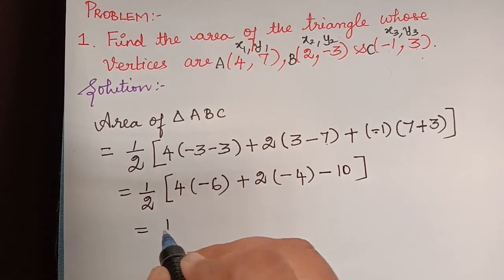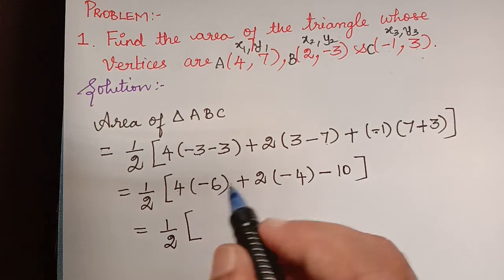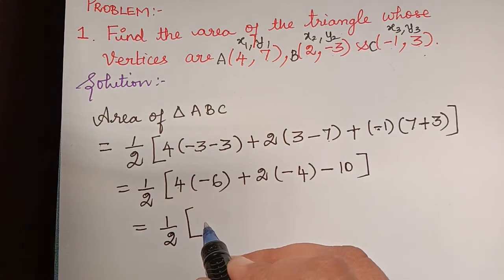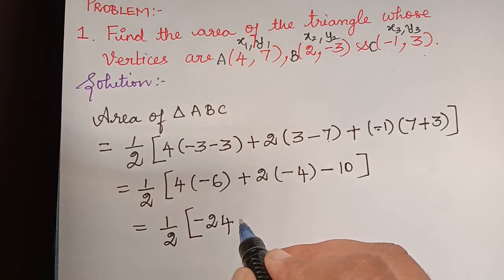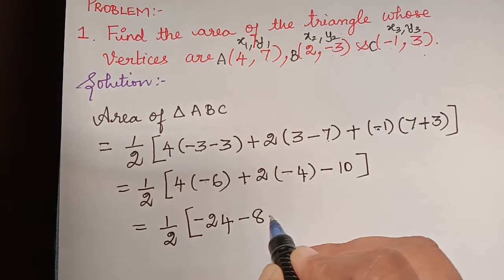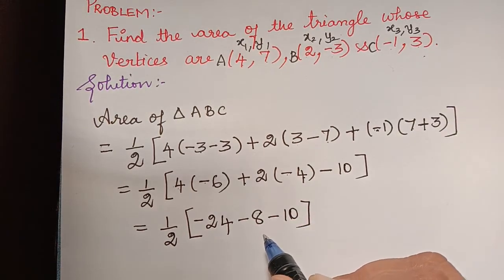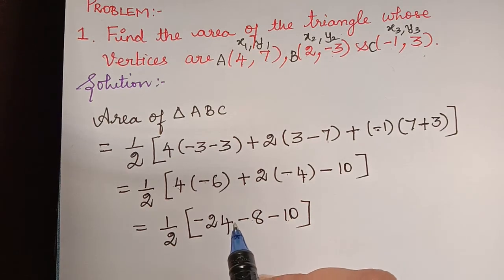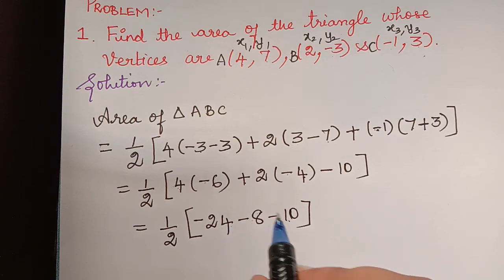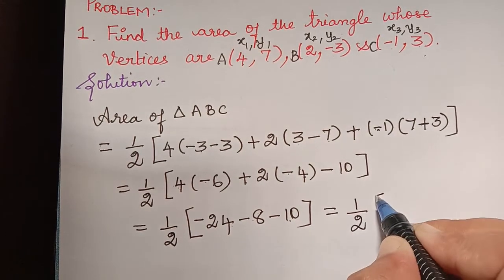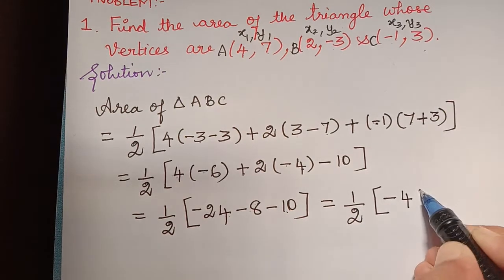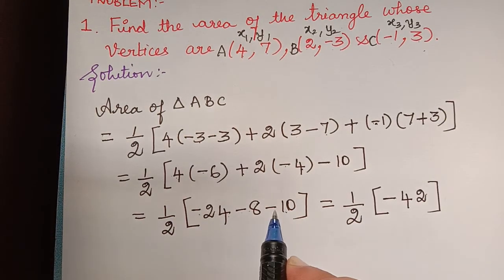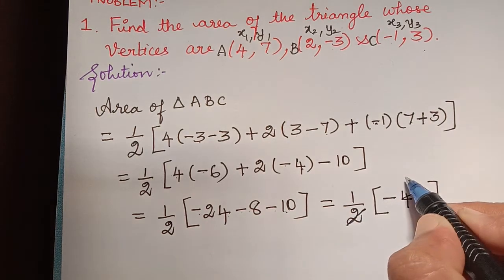Simplifying further: 4 times 6 is 24, so that gives minus 24. Plus times minus gives minus 8. And minus 10. Since all terms carry a negative sign, we add all three: 24 plus 8 plus 10 equals 42, giving negative 42. Therefore 1/2 multiplied with negative 42 gives negative 21.